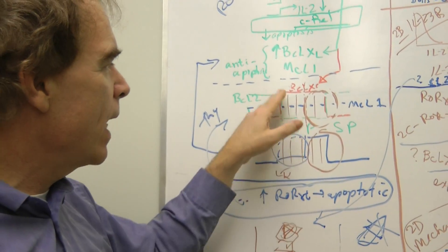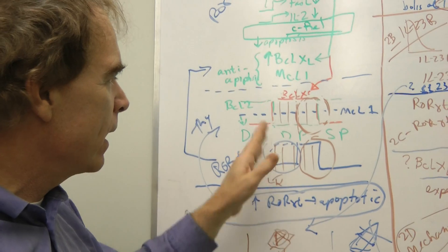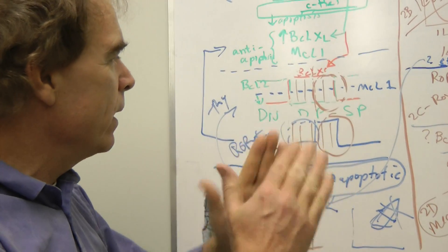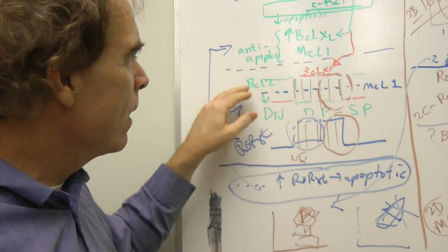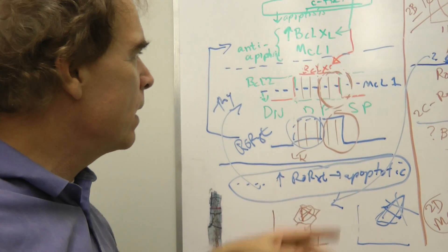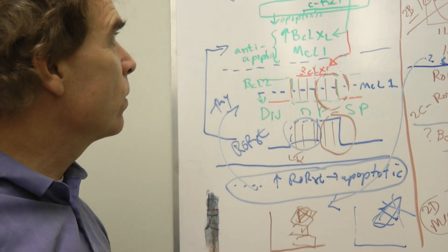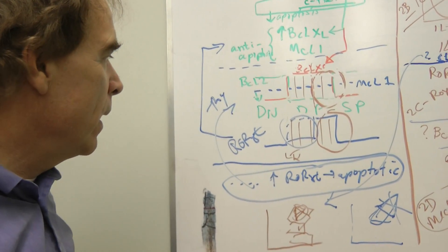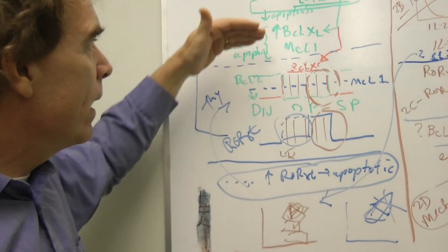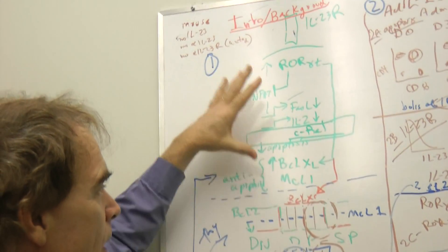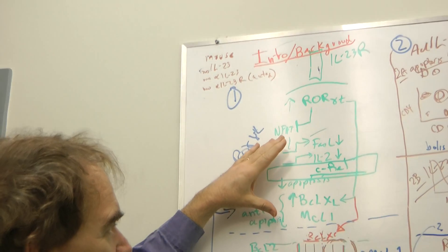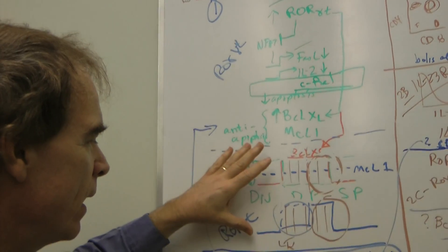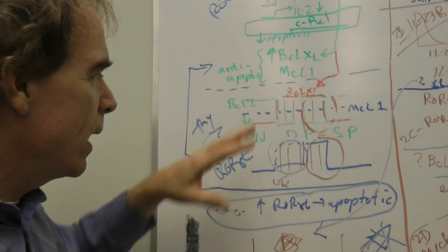BCL-XL sort of does the opposite, but may not be exactly stepwise. MCL-1 stays the same. MCL-1 is regulated also by ROR gamma T. So in any event, you see what we're doing. ROR gamma T through its signaling pathway, what's known. Finally, apoptosis regulation in the thymus.